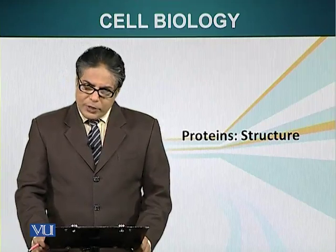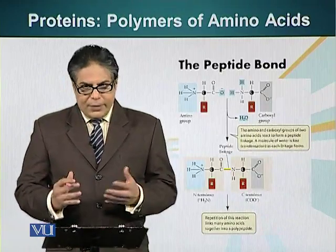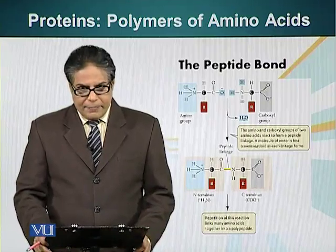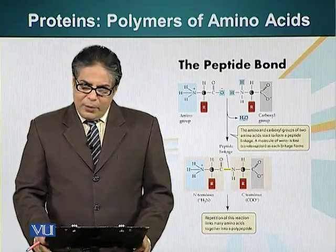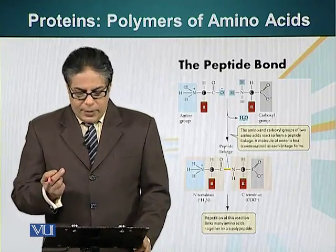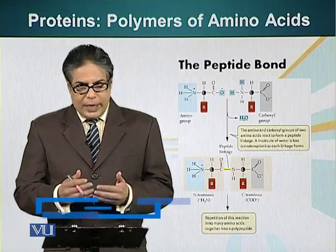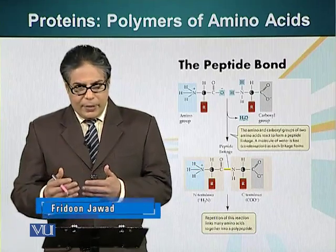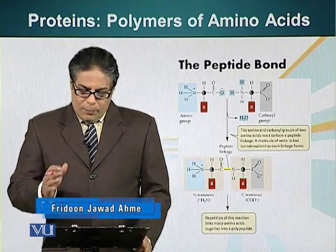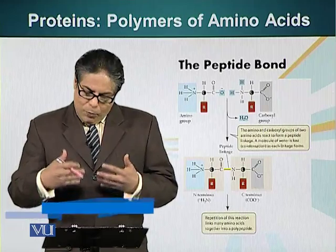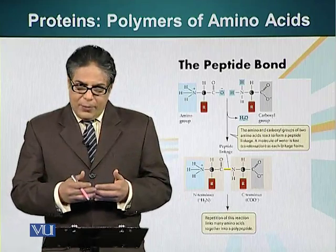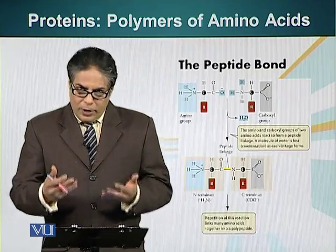The primary structure of protein is basically the sequence in which amino acids are linked together. We have already mentioned that amino acids are the basic unit of proteins — they are the monomers. These monomers are linked together through a peptide bond, which forms when a water molecule is removed from two adjacent amino acids — a condensation reaction.